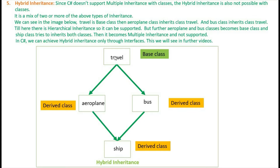In C# we can achieve hybrid inheritance only through interfaces, which we will see in further videos. Travel is one base class. Aeroplane class is a derived class which inherits Travel class. There is another derived class Bus which also inherits base class Travel. So here there is hierarchical inheritance, which is possible with classes. But then derived class Aeroplane and derived class Bus become base classes for class Ship.